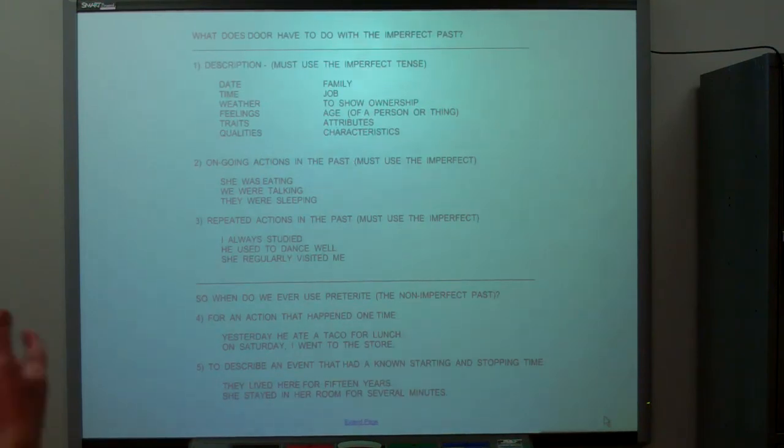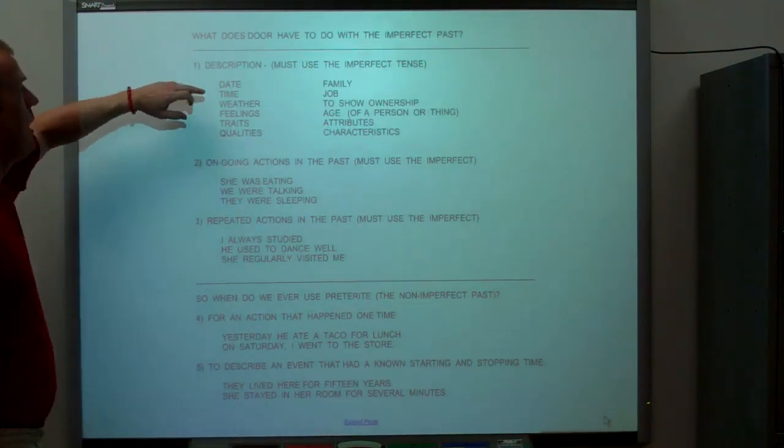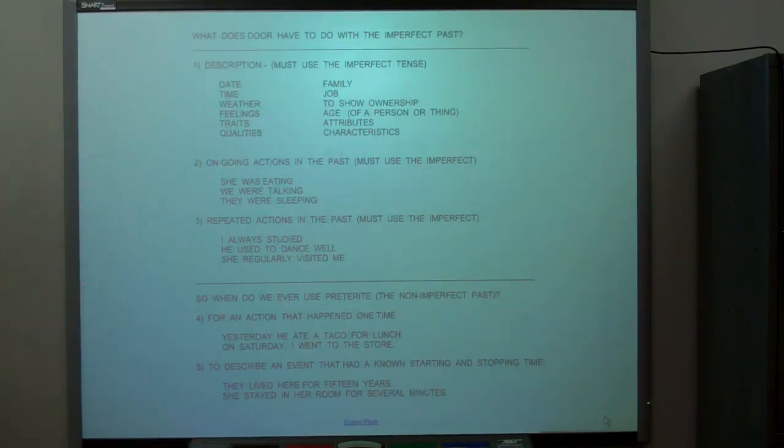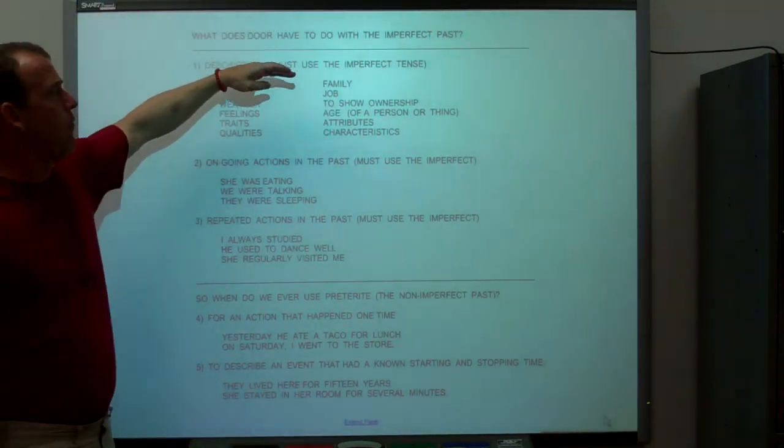Any time you're describing anything in the past is imperfect. If you're talking about the date, it was the 5th of May. Time, it was 4 o'clock. Weather, it was hot. Feelings are imperfect. Traits, qualities, characteristics.